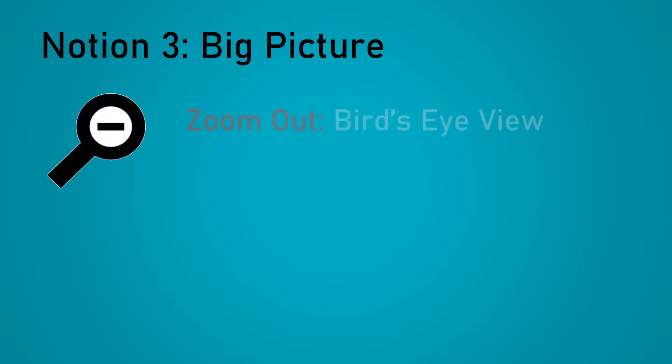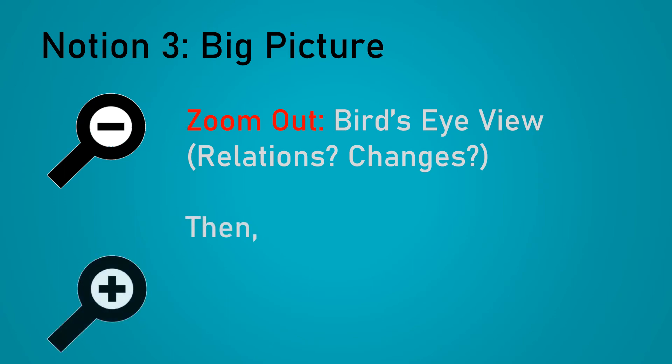Last but not least, our final notion of zooming in and out is to consider the big picture. We begin by zooming out and trying to get a bird's eye view of the problem. Are there any interesting relationships? And how do things change as we go along? Once we find anything unusual, we'll then zoom into the specific value or entity that we are supposed to find for that particular problem.